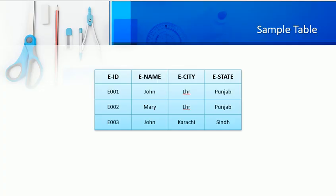This is a simple table with employee ID, employee name, employee city, and employee state. These are 4 attributes or columns. This is a simple table which we will use as a sample or example.